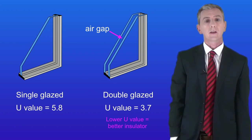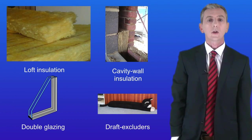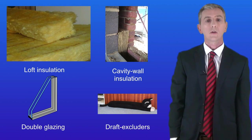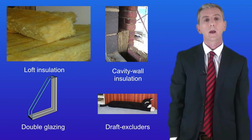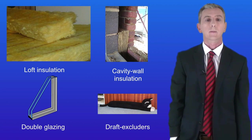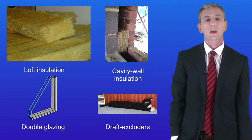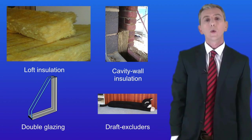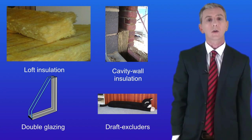There are several other ways we can insulate a house. We can use loft insulation to reduce heat loss through the roof and cavity wall insulation to reduce heat loss through the walls. Both of these work in a similar way — air is trapped between the fibres, which means that convection currents cannot form, reducing convection. We've already seen that air is a poor conductor. We've also seen how double glazing reduces heat loss through windows. We can even use really cheap methods such as a draft excluder to prevent air from passing under doors.